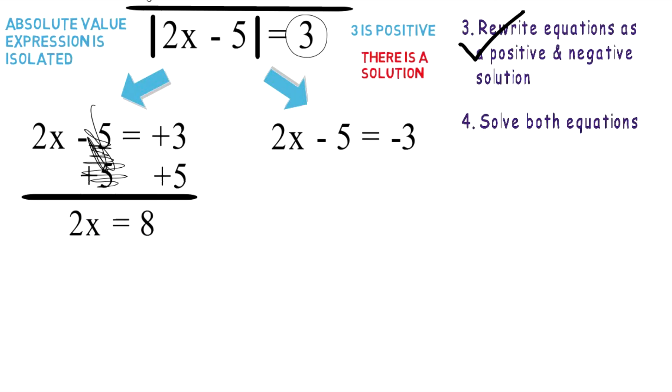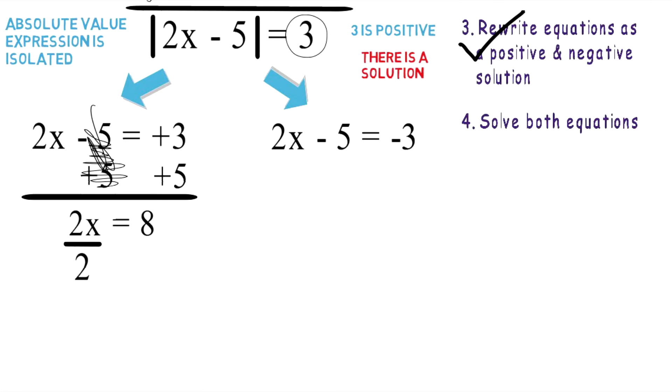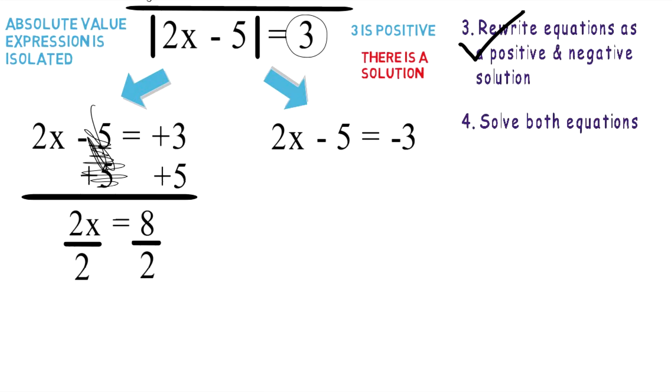Again, you want to use inverse operations. So let's divide by two on both sides of the equation. Positive two and negative two cancel each other out, and you're left with x = 4.